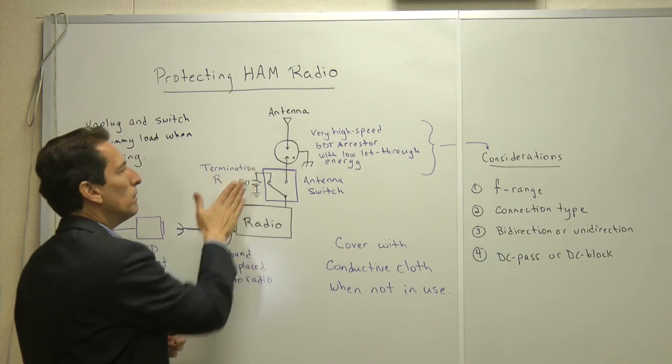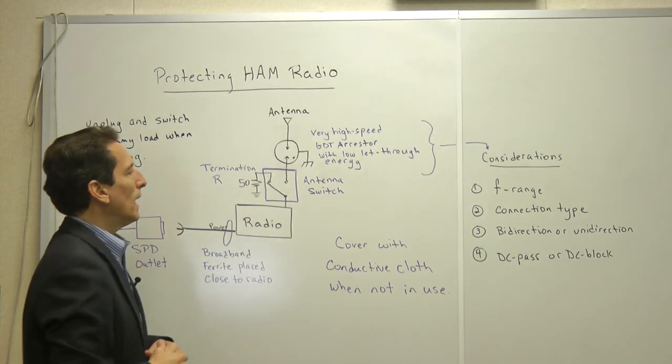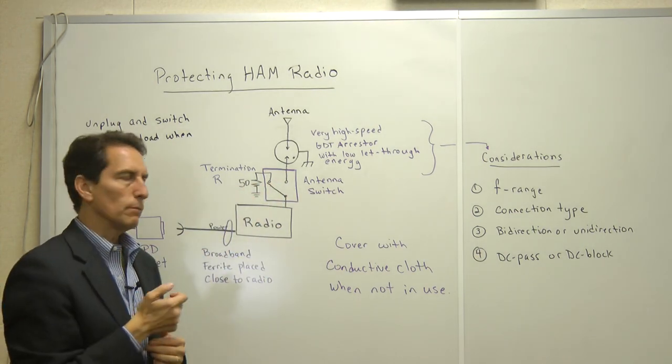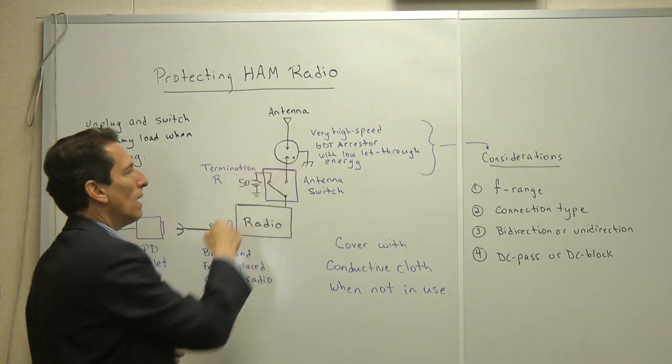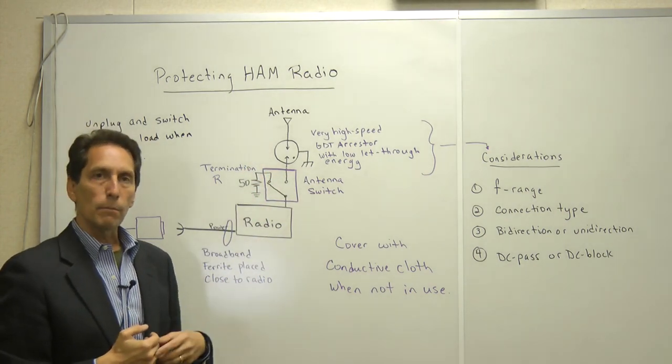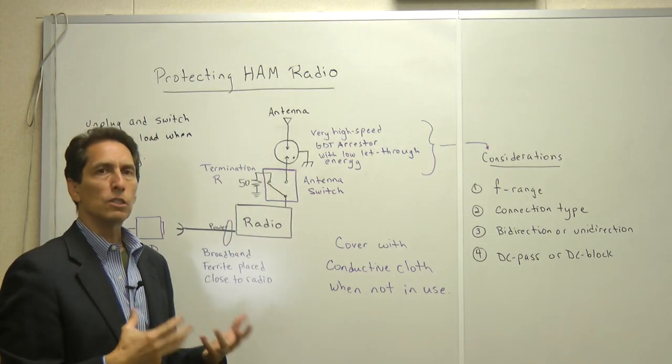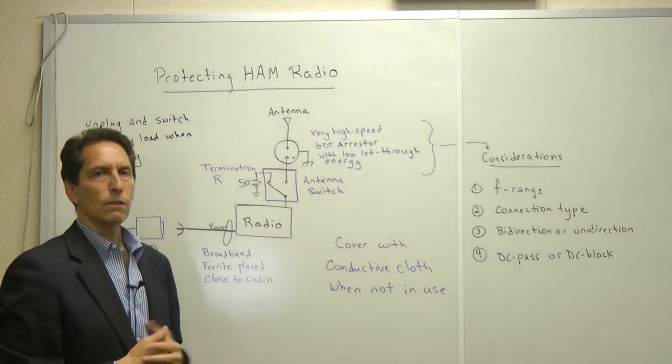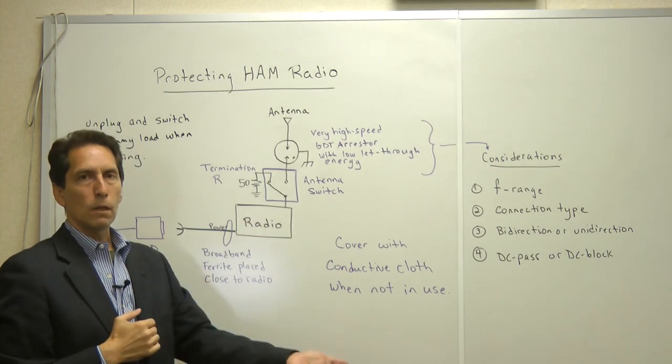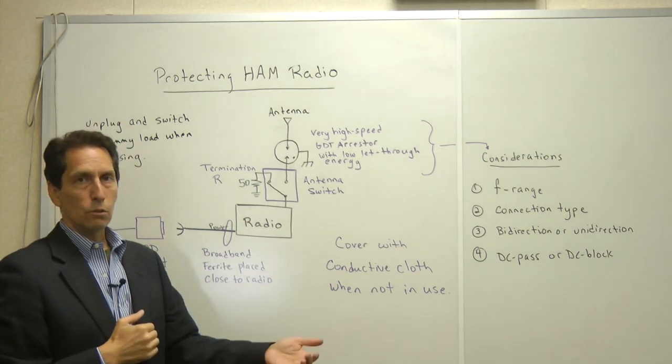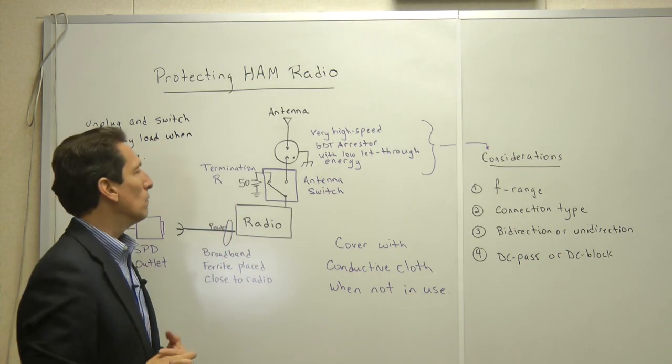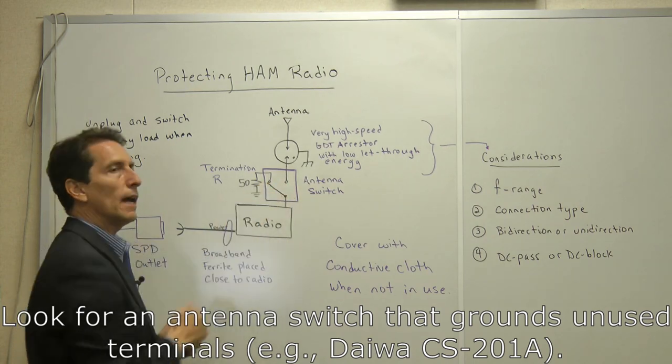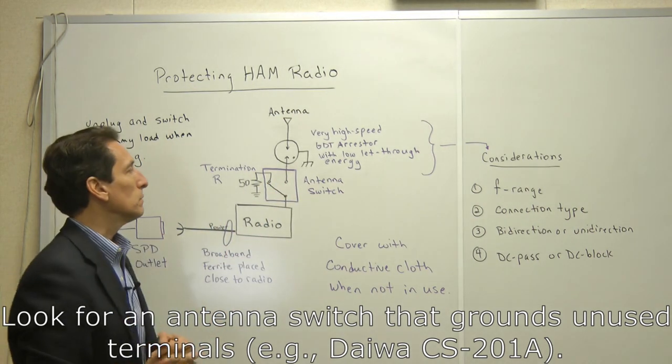Now some people might say, well, why put 50 ohms there at all? Why not just leave it disconnected? And the reason you don't do that is when you try and transmit, if you accidentally leave it in that position and you transmit, you'll send that energy out that wire. It'll hit the open stub and it will reflect back and you'll get a very high voltage standing wave ratio. And that energy that gets reflected back can actually damage the transceiver in the radio. So you don't ever want to transmit into an open load or usually into a short circuit either. So the 50 ohm load is a good way to do that, a good safe way to do that.